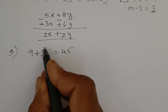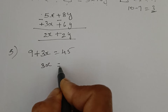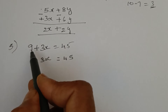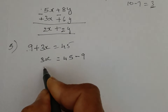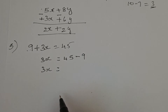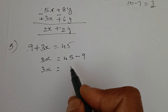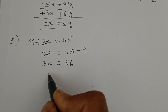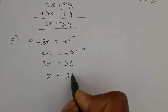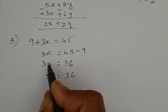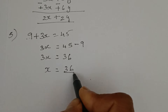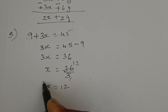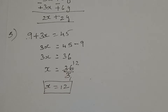Now we solve for x. Keep the x term on the left-hand side and 45 on the right-hand side. Take 9 to the other side — plus 9 becomes minus 9. So 3x = 45 minus 9 = 36. Now 3x = 36, so x = 36 ÷ 3. Cancel: 3 ones are 3, giving x = 12. The whole number is 12.